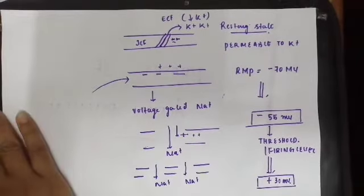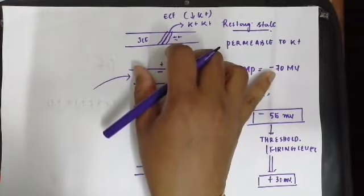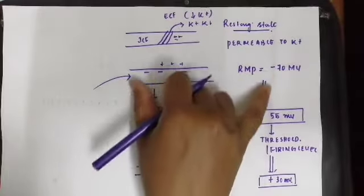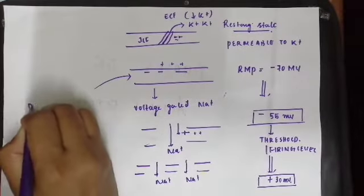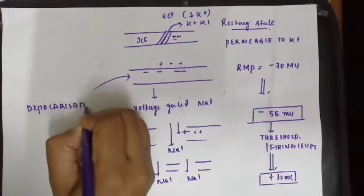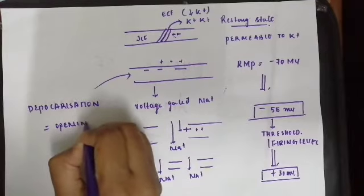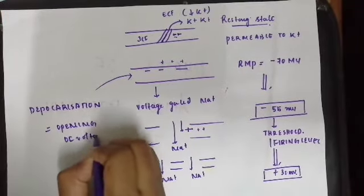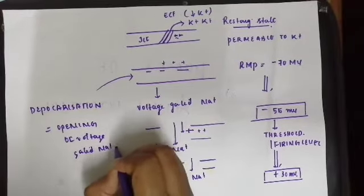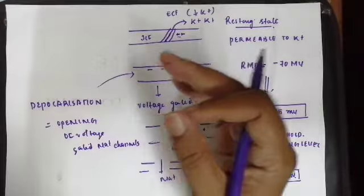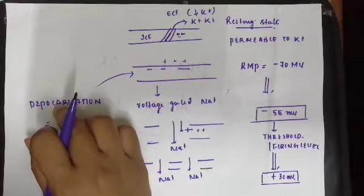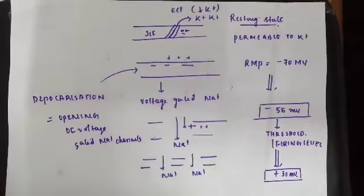Depolarization means a change in polarity or reversal of polarity — from minus 70, a negative potential, it has changed to a positive potential. Depolarization is mainly because of opening of voltage-gated sodium channels and entry of sodium into the cell. To summarize: the ion responsible for resting membrane potential is potassium, and the ion responsible for depolarization of the cell is sodium, moving into the cell through voltage-gated sodium channels.